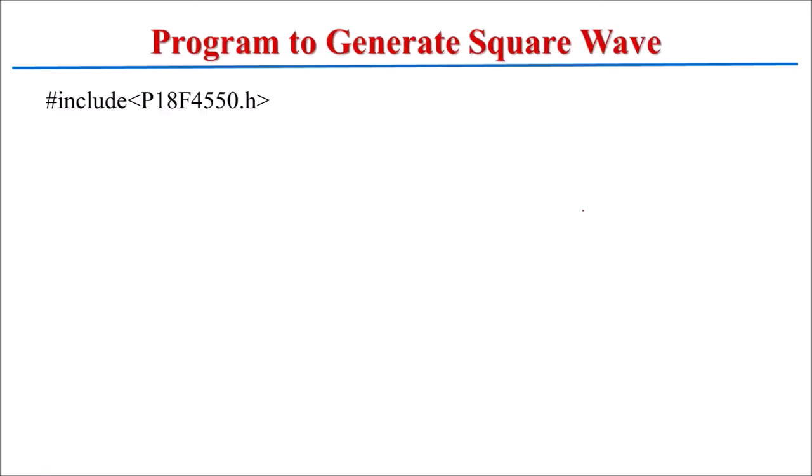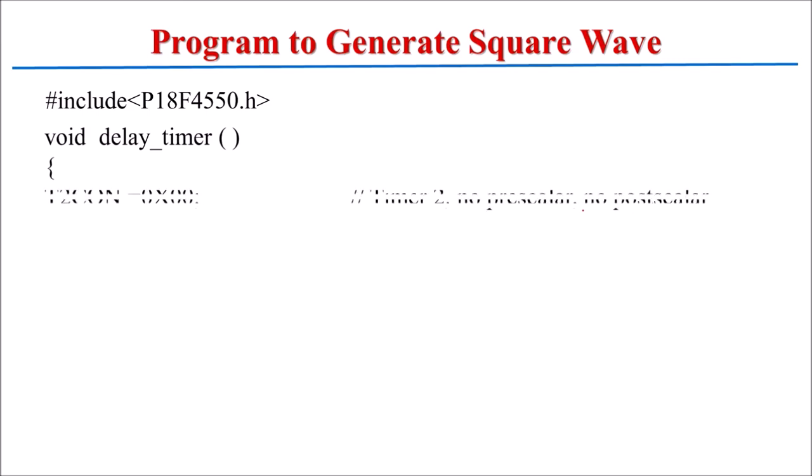We will write a program to generate a square wave at pin RC0, but now using Timer 2. The first step is to include the header file, then write a delay function using Timer 2. First, we initialize the T2CON register — since we are not using pre-scaler or post-scaler, all bits will be 0, and initially we keep the timer off. So all bits of T2CON are initialized to 0. Then the TMR2 register will start counting from 0x00, so we initialize TMR2 with 0x00.